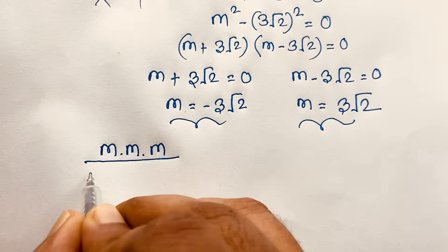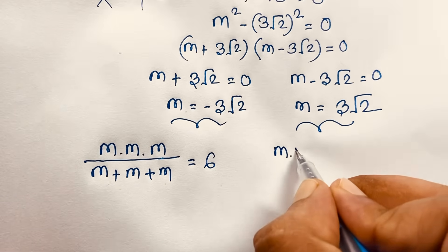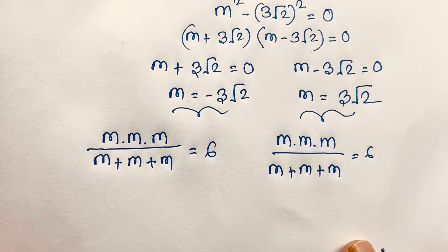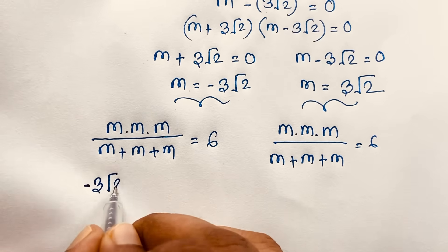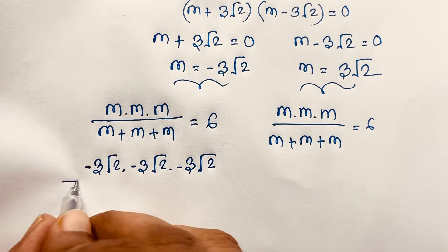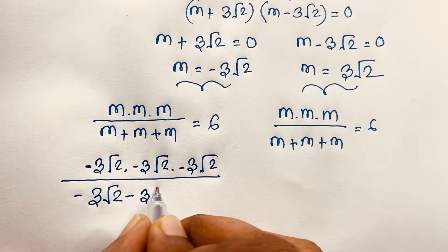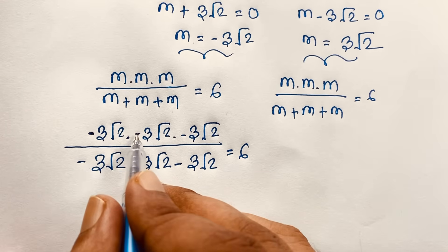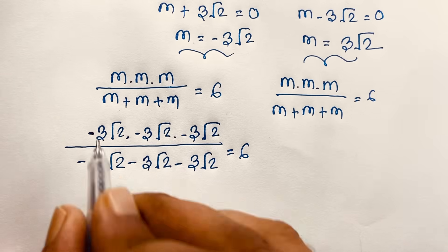I verify both values. For m equal to negative 3√2: m cubed over 3m. Substituting m equals negative 3√2: negative 3√2 times negative 3√2 times negative 3√2, over negative 3√2 plus negative 3√2 plus negative 3√2. The denominator gives minus 9√2. Now at this moment, minus times minus is plus, then plus times minus is minus, so the numerator is minus 3 times 3 times 3, which is minus 27, times (√2)³.